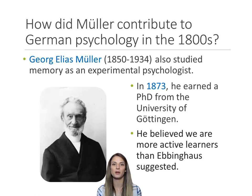Georg Elias Muller is also well known for his experiments on memory. He was a German psychologist who earned his Ph.D. in 1873 from the University of Göttingen.